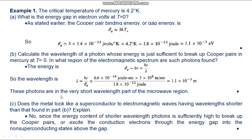Part (c): Does the metal look like a superconductor to electromagnetic waves having wavelengths shorter than that found in part (b)? No, since the energy content of shorter-wavelength photons is sufficiently high to break up the Cooper pair or excite the conduction electrons through the energy gap into the non-superconducting states above the gap.